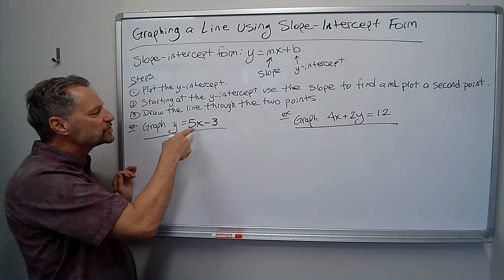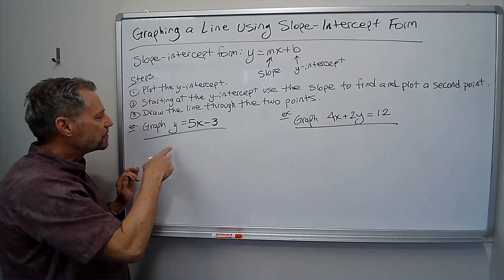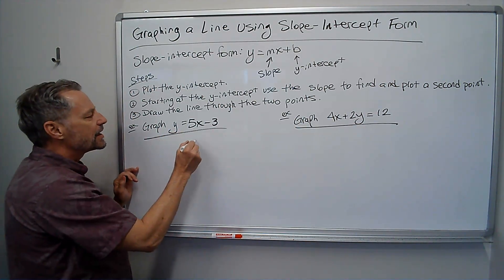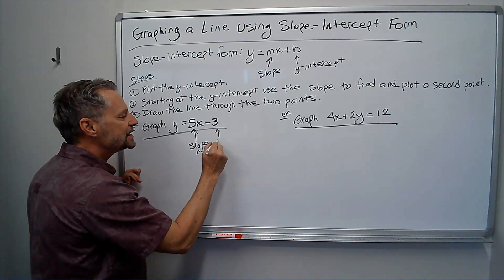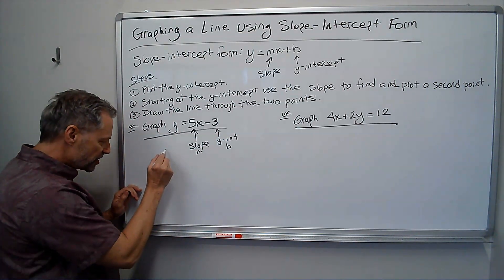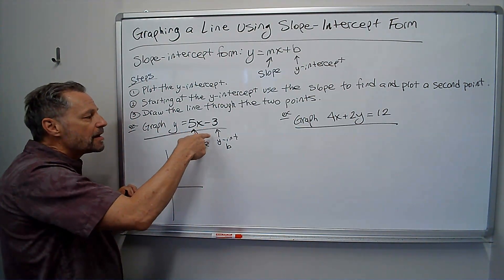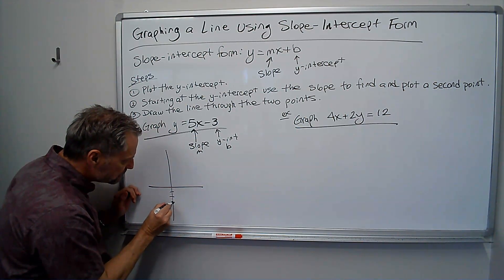So I've got y equals 5x minus 3, and it's already in my slope-intercept form. So I look at this and say, that must be the slope, or that's m, that must be the y-intercept, or b. And so I start off, my y-intercept is negative 3, so let's just go there, and that's my first point on the graph.